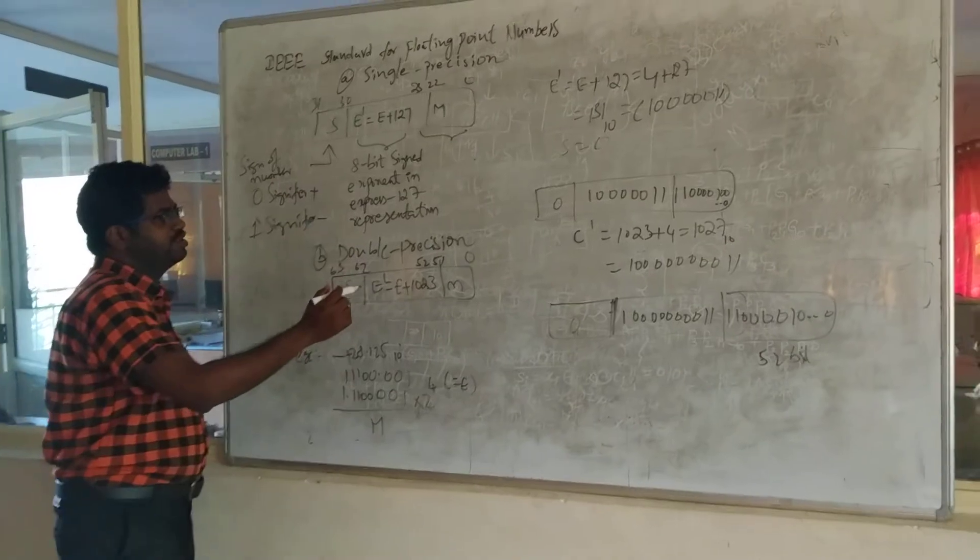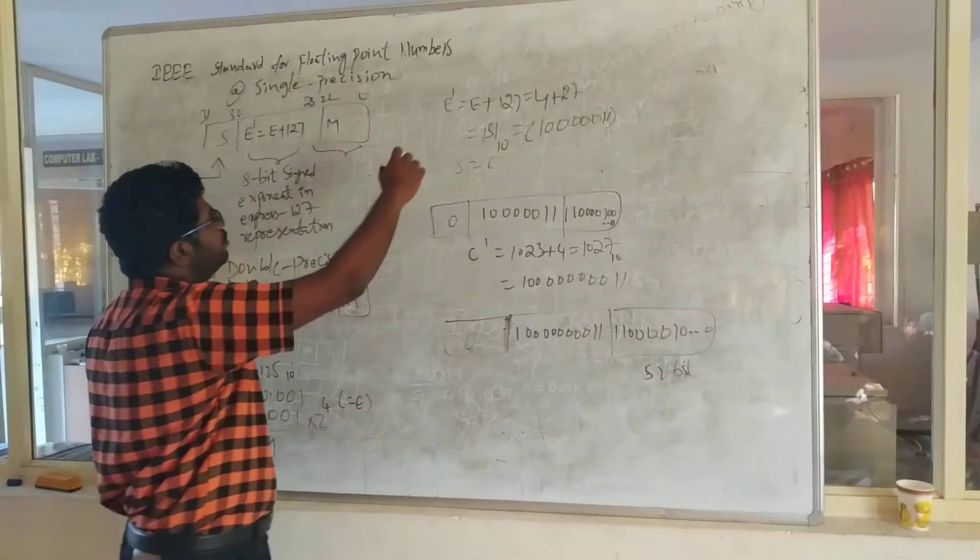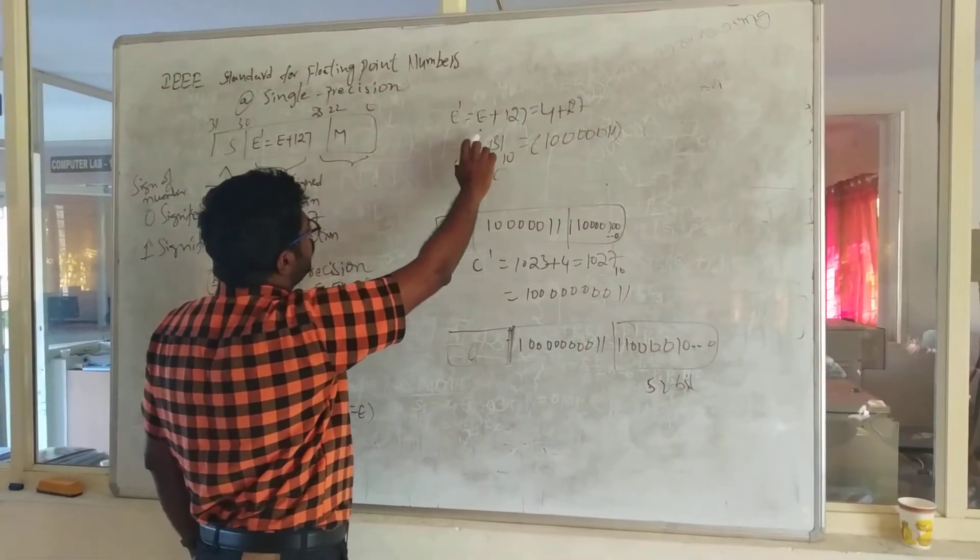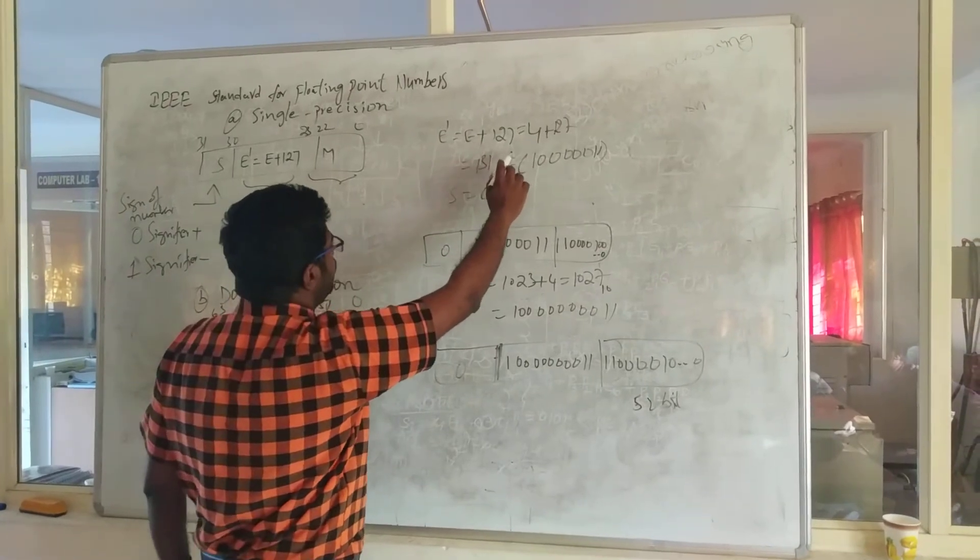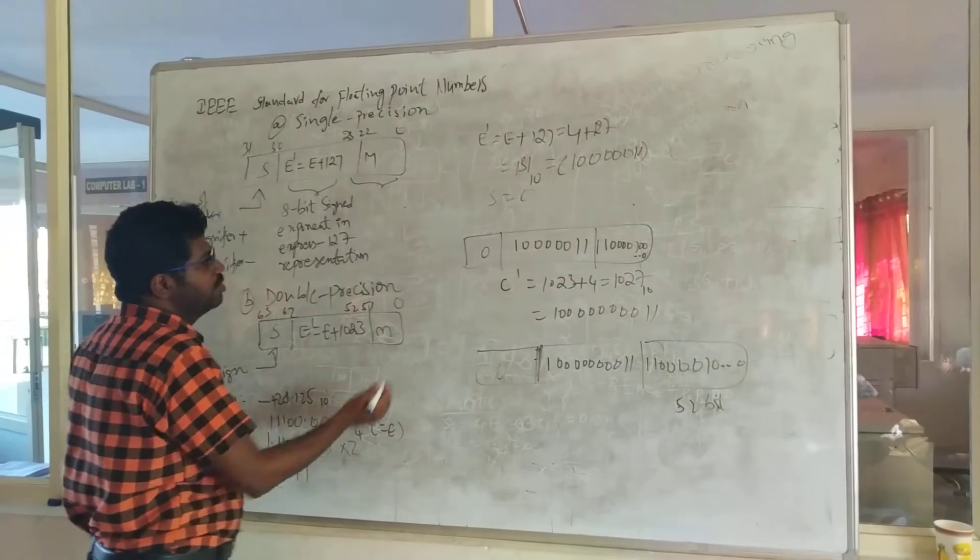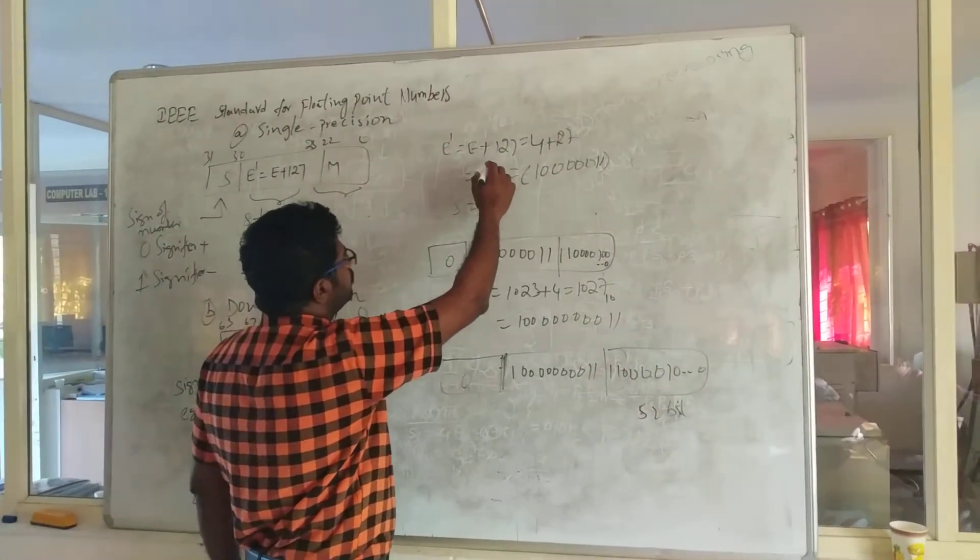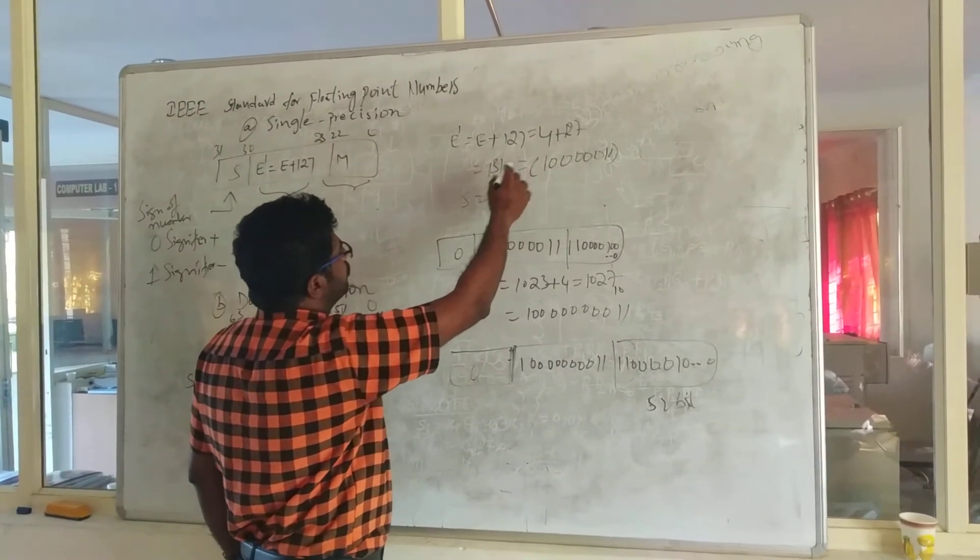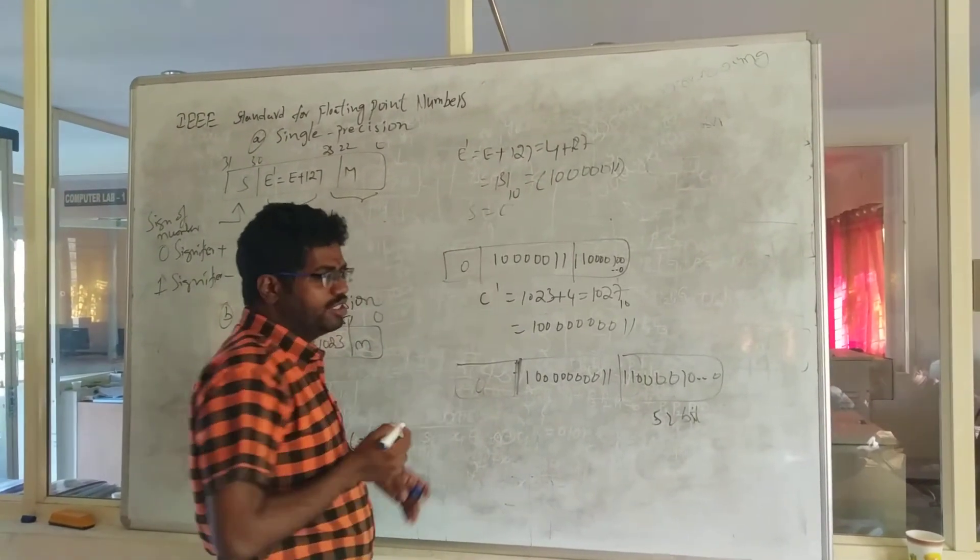So this is the way we are representing. I am continuing with the exponent. How do you write E'? E' equals E plus 127. Here the E value (exponent) is 4, so I am substituting 4 plus 127, so total is 131.